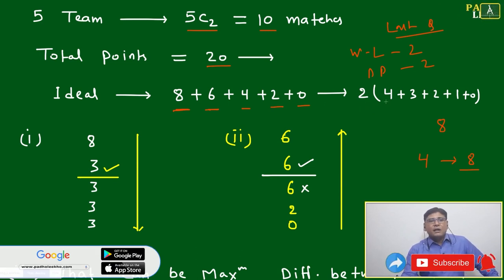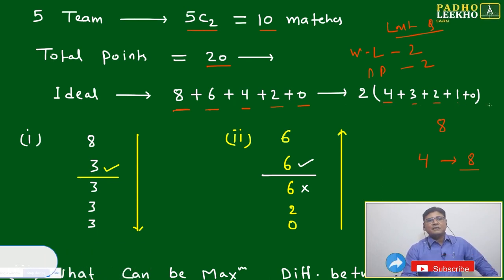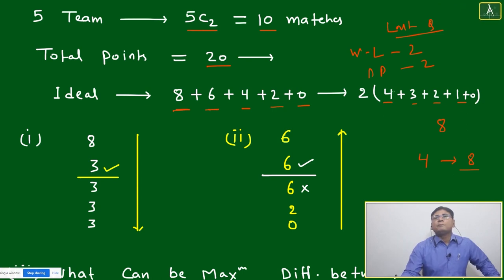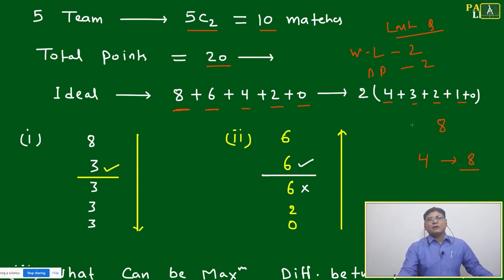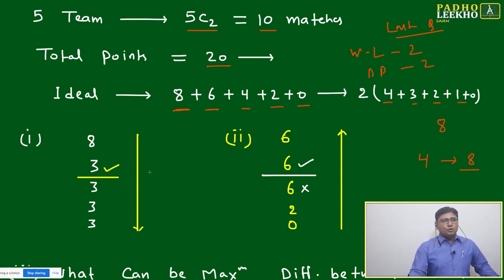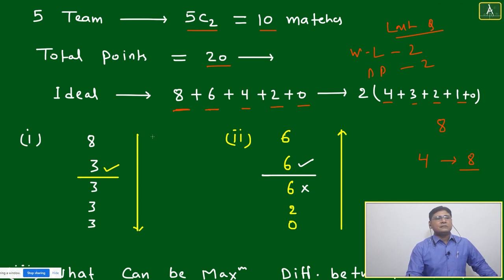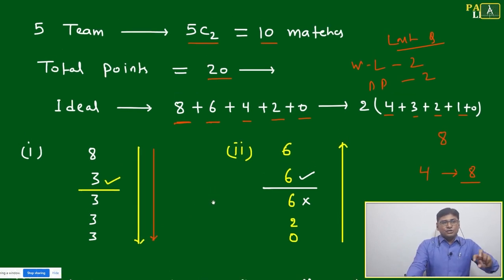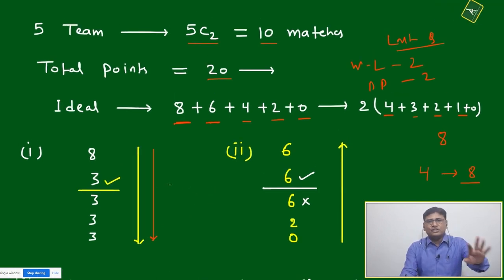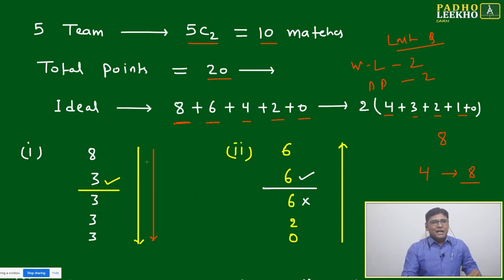We can write the ideal distribution as four wins, three wins, two wins, one win, and zero wins — equivalent to points 8, 6, 4, 2, 0. The last team has lost all matches. Now, to find the minimum points to qualify, we must start the distribution from top to bottom. Only then will you not make a mistake. If this question gets more complicated, I'll walk through that too — but start from top to bottom.